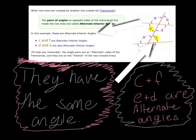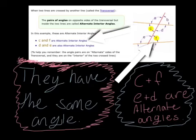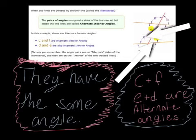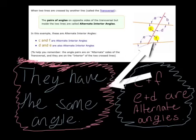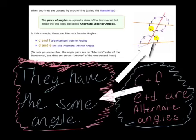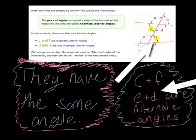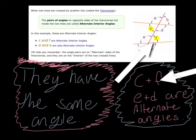In this example, these are alternate interior angles. C and F — right over there — and D and E. They have the same angle. E plus D are alternate angles.